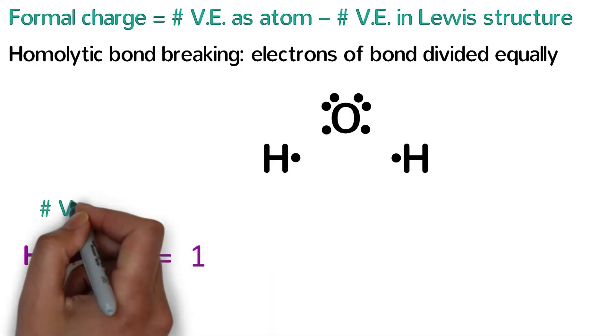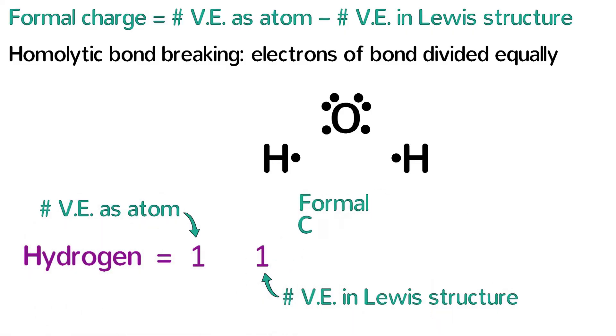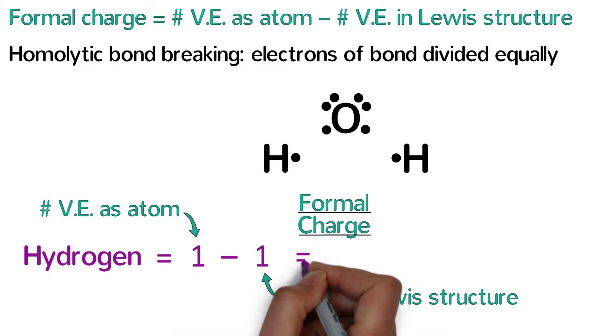Hydrogen normally has one valence electron, and it has one valence electron in water, so its formal charge is one minus one, which is zero. This is true for both hydrogens in this structure.